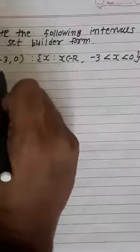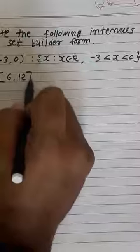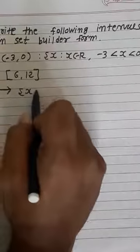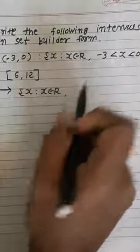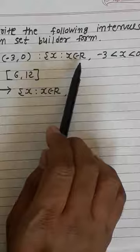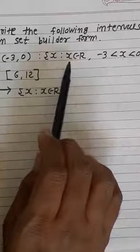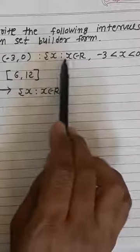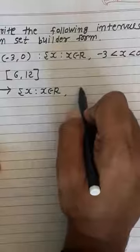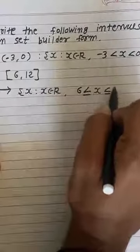Second question: closed interval [6, 12]. Since no condition is mentioned about natural numbers or integers, we consider real numbers. So the set builder form is: {X | X belongs to R, 6 ≤ X ≤ 12}.